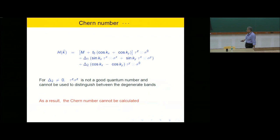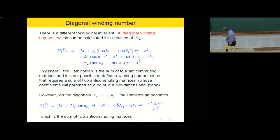For delta_2 not equal to 0, tau_z sigma_z is no longer a good quantum number, you can no longer distinguish between the two degenerate bands, and it turns out you can't calculate the Chern number. So the Chern number is only calculable when delta_2 is 0. However, it turns out that there's another topological invariant — which we call the diagonal winding number — which can be calculated for all values of delta_2.